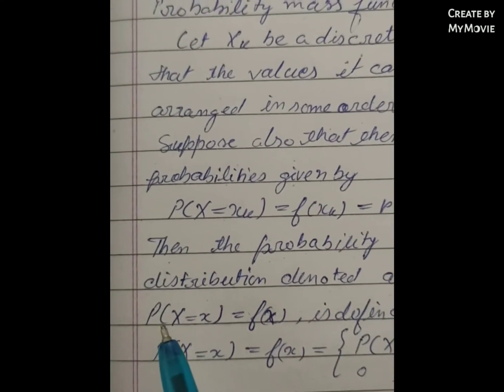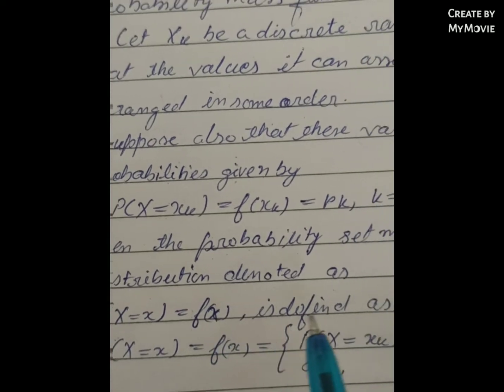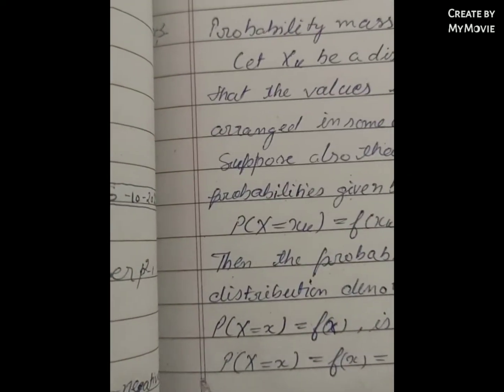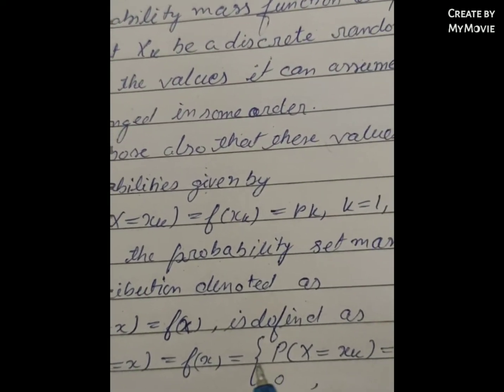Probability of X (capital X) equals x (small x) equals f(x) is defined as P(X = x) = f(x) with curly bracket starts.